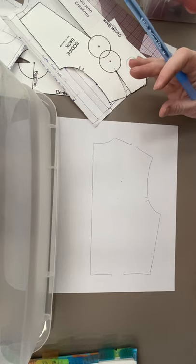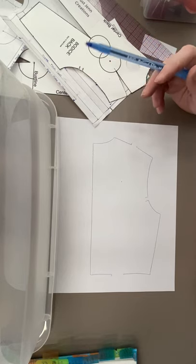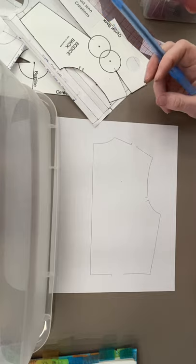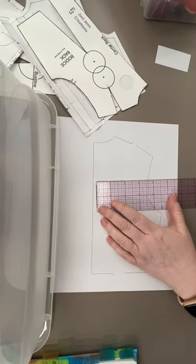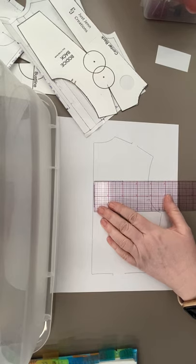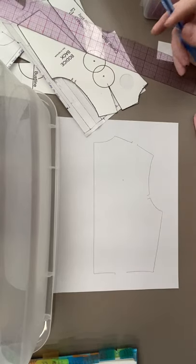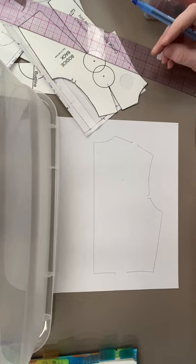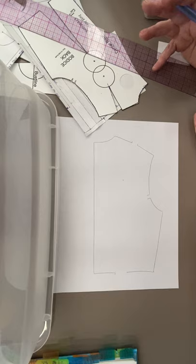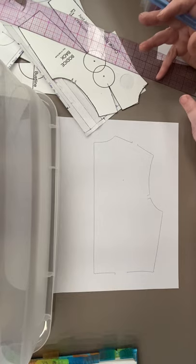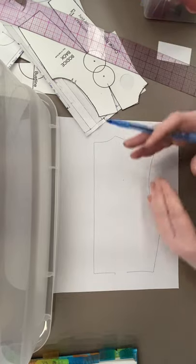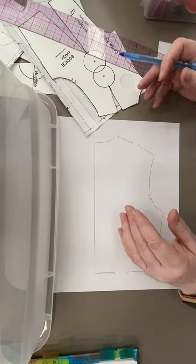I need to decide how deep I want my box pleat to be. The width of this back is only three and three-quarter inches. So if I'm going to put a box pleat right down the center and I'm trying to keep it proportionate, I probably don't want it bigger than an inch, maybe an inch and a quarter at the most, because that's about a third of the distance of the half. Does that make sense?